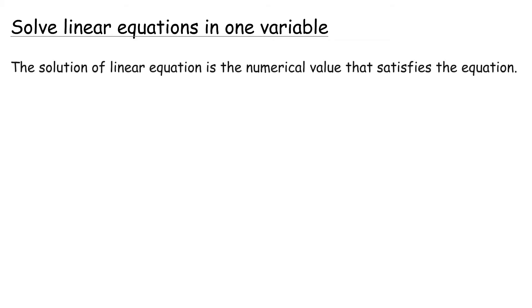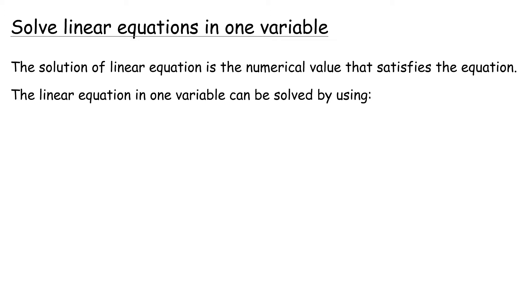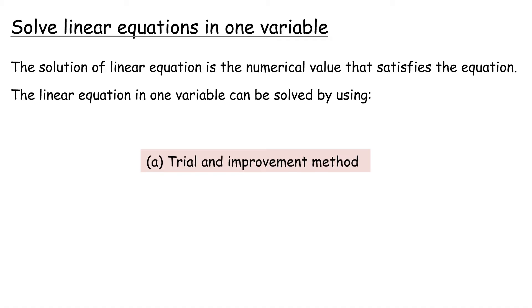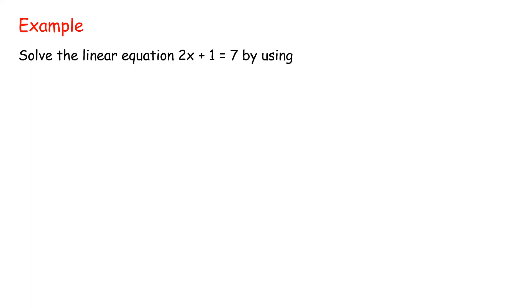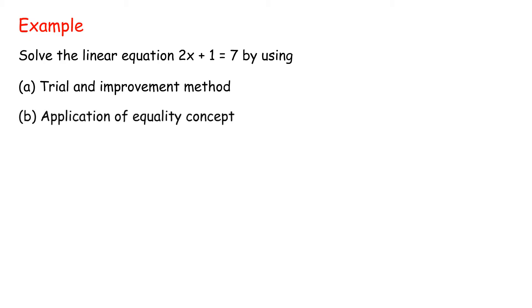Solve linear equations in one variable. The solution of a linear equation is the numerical value that satisfies the equation. The linear equation in one variable can be solved by using three methods: (a) trial and improvement method, (b) application of equality concept, (c) backtracking method. Example: solve the linear equation 2x + 1 = 7 using each method.